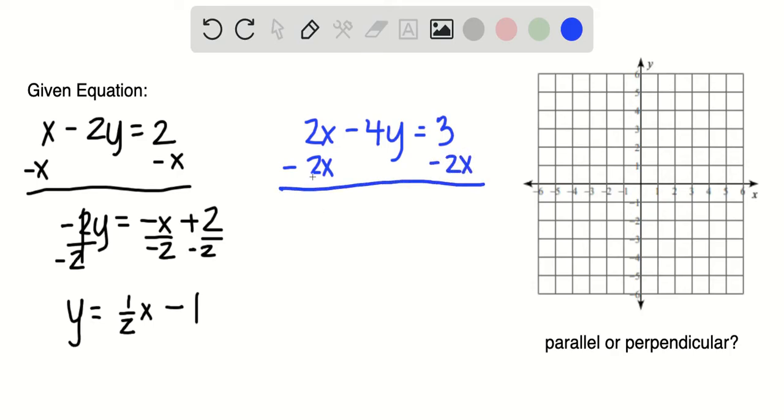So I have minus 4y is equal to, again going to put this in slope intercept form, minus 2x plus 3. And then I'm going to divide everything by negative 4, both the left side and everything on the right side.